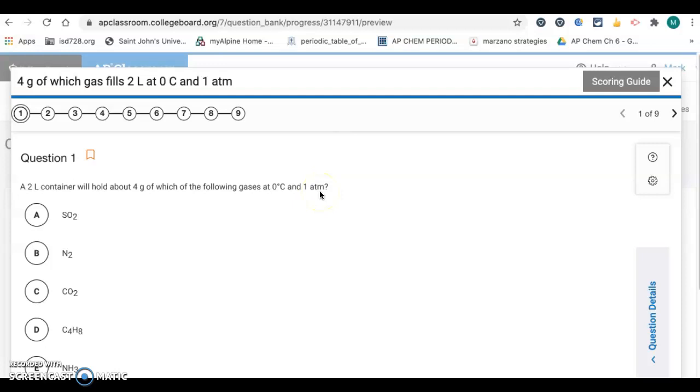All right, so with this one you want to use the ideal gas law, PV equals nRT. And then you want to solve for n, the number of moles. So n will be equal to PV divided by RT.